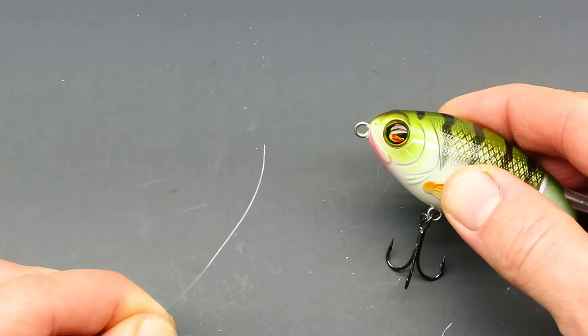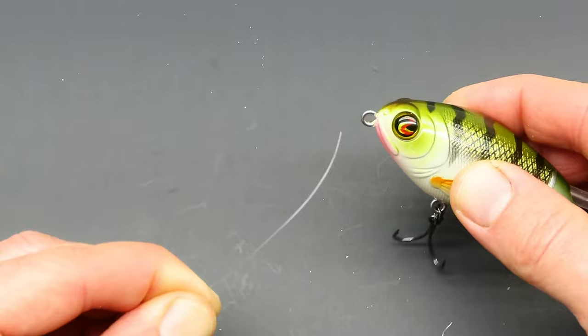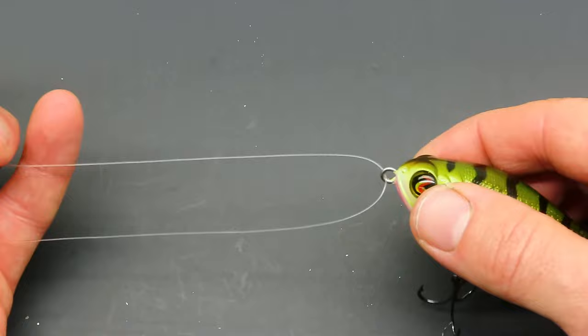So the first step to the modified uni is to place your line through the eye of the lure, bring about 10 inches of line back and then place it through the eye again.